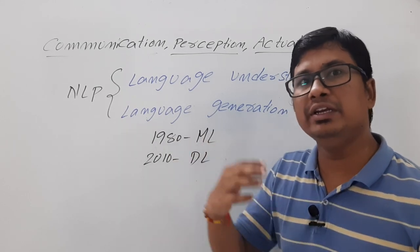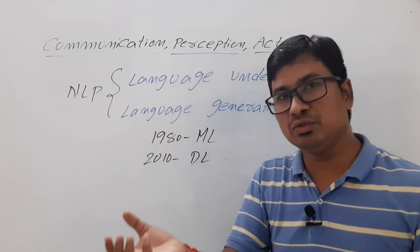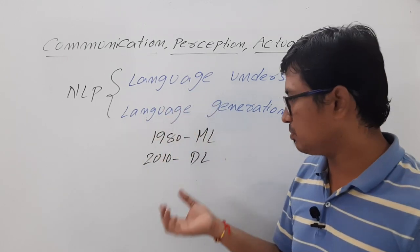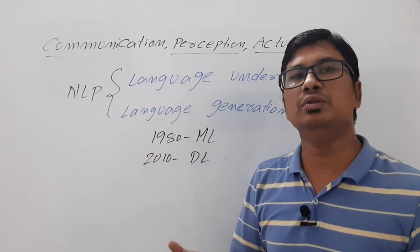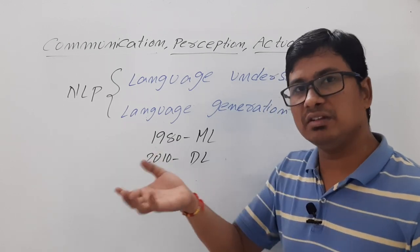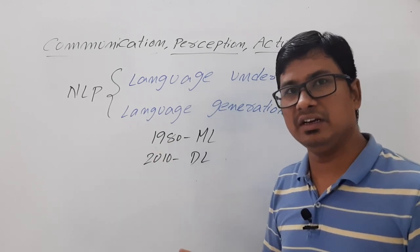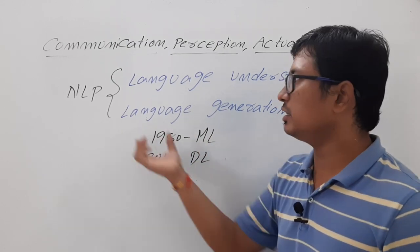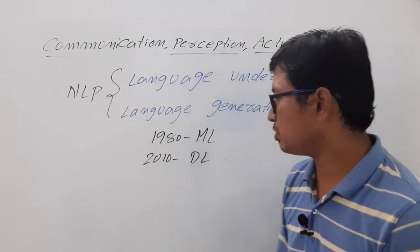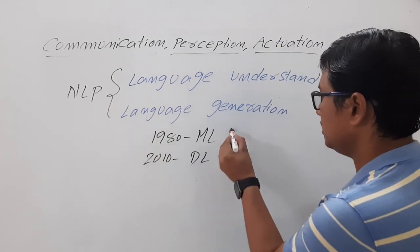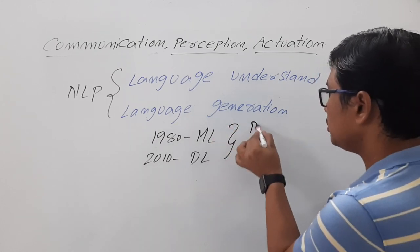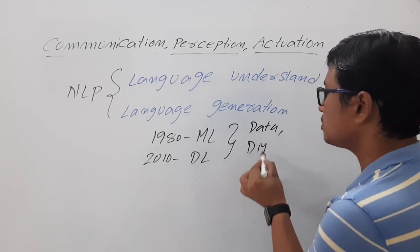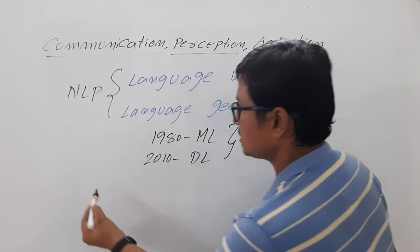In machine learning techniques, we need to manually extract features from the data and provide those features to a classifier, which then classifies things. But in deep learning models, we do not need to provide any features — the model itself learns the features from the hidden layers and then classifies. That is why people started using deep learning for NLP. So in natural language processing, data and data modeling are involved.